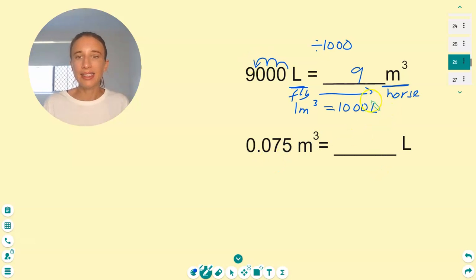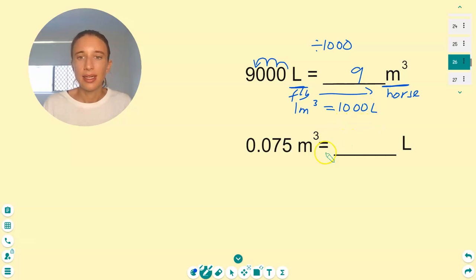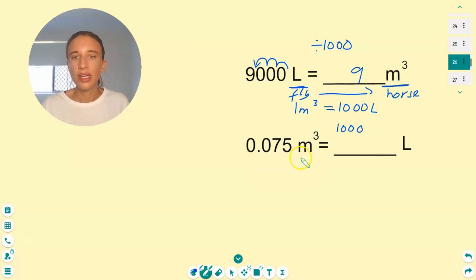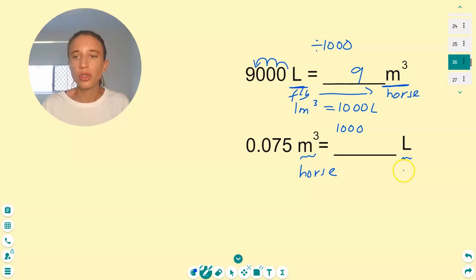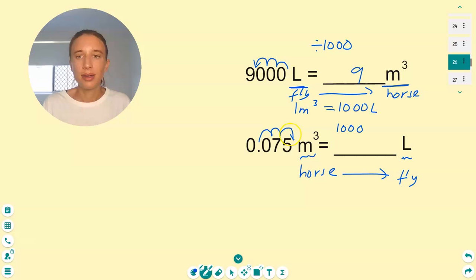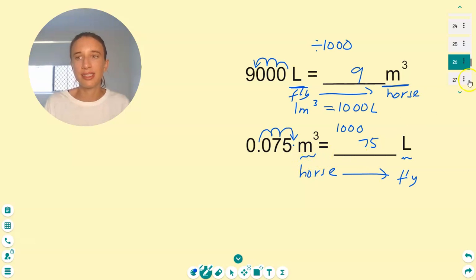Same conversion factor — one meter cubed is a thousand liters. Now do we multiply or divide? Which is bigger, one meter cubed or one liter? The big box, of course — that's our horse unit. Horse to fly, multiply — making the number bigger. So 0.075 meters cubed equals 75 liters.